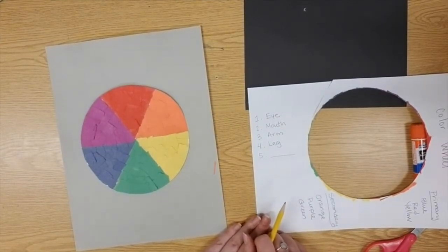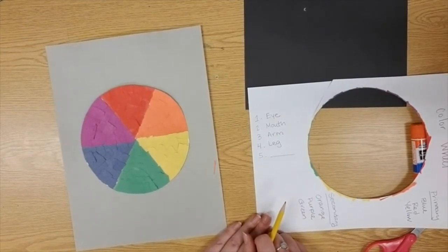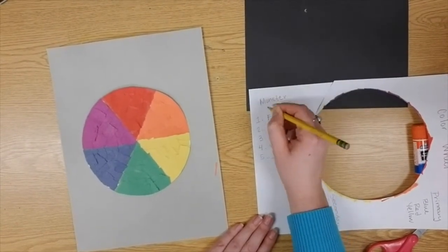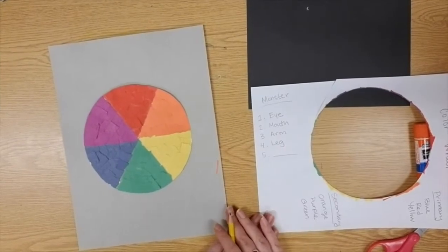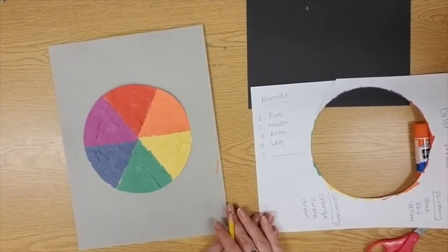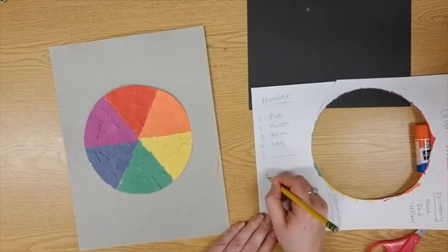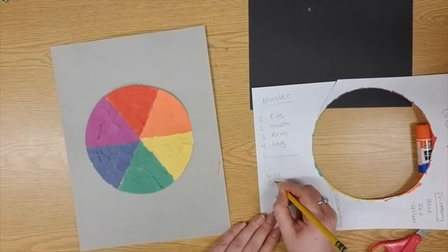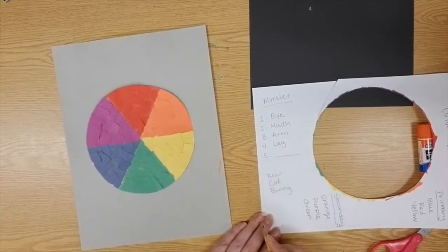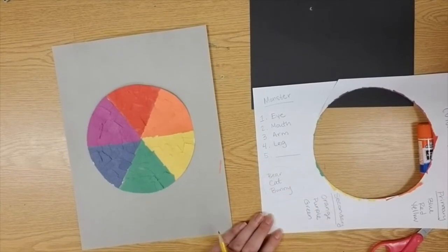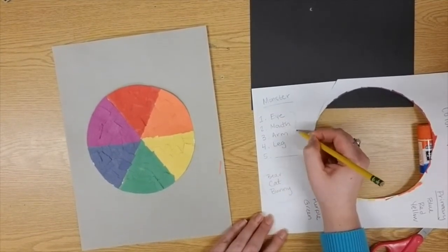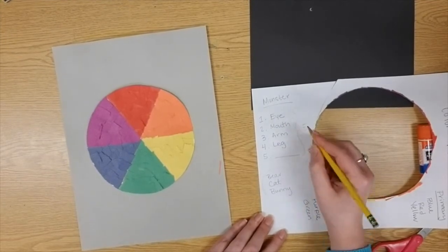Now the last thing that I want to tell you artists is even though I am making a monster does yours have to be a monster? No my friends. I've had many friends in the past make other types of animals such as bears and cats. I've even had some cute little bunnies before. So if you wanted to do something like an animal instead you could but again you have to have these five things on your monster.